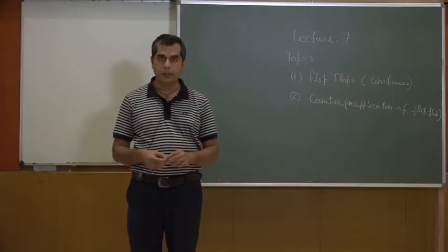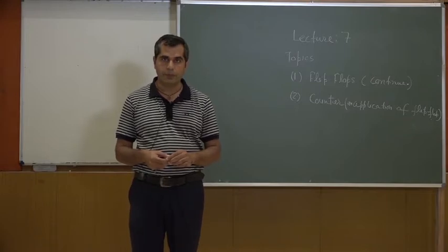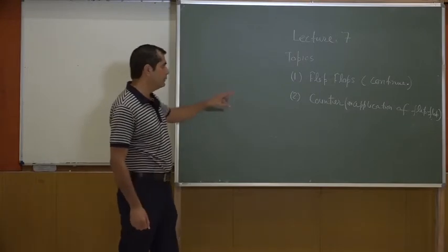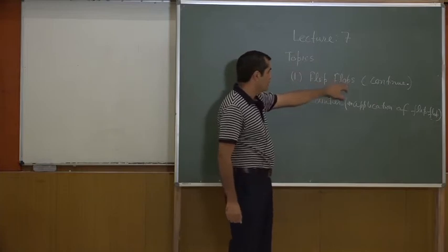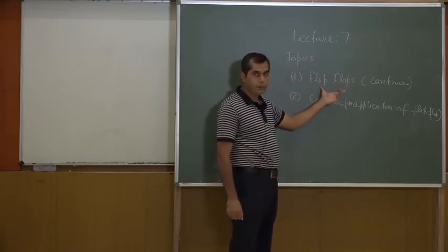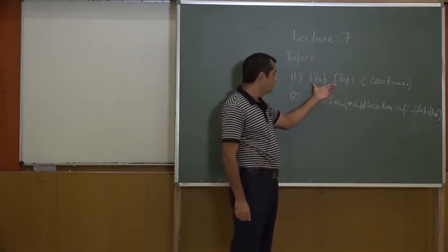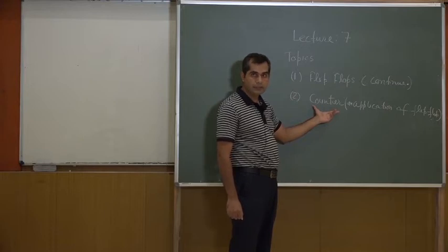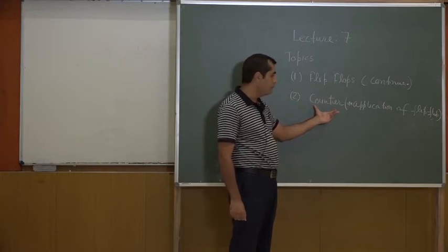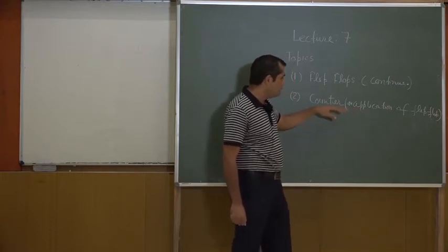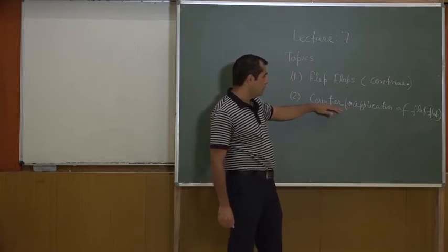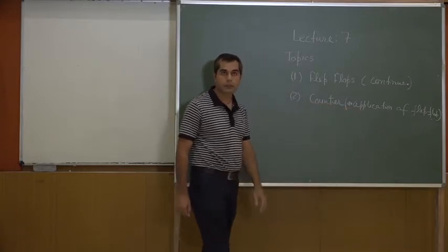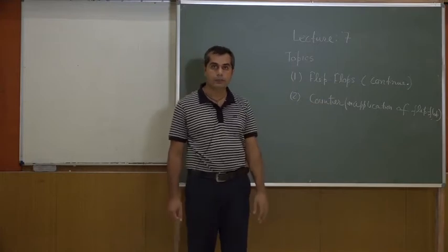This is the 7th lecture on digital electronics. We shall discuss the following topics today. The first one is flip-flop — we will complete our discussion on flip-flops and then take one example of how to use flip-flop to build digital circuits. We shall talk about counters: two different kinds — ripple counters and synchronous counters.